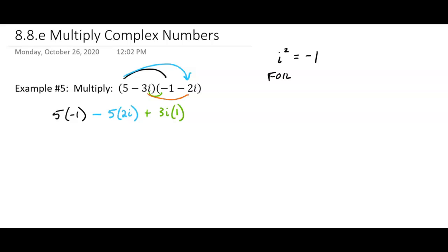And then I've got my last, which is going to be a negative times a negative which is going to be positive, and then I'm going to have 3i times 2i. Okay, so those are all the different pieces.